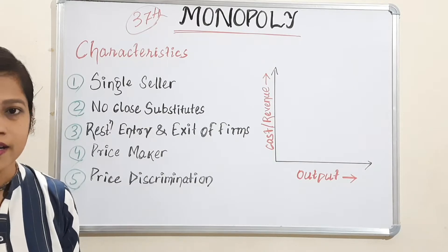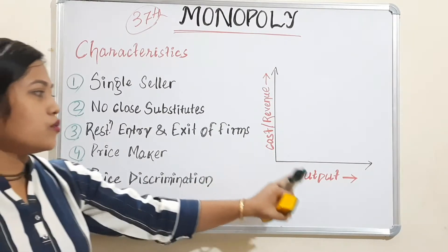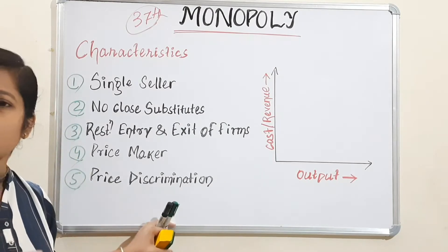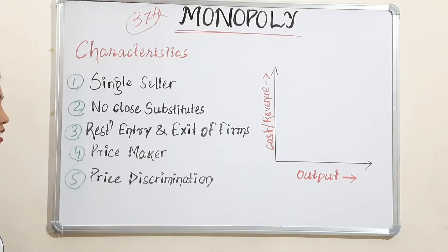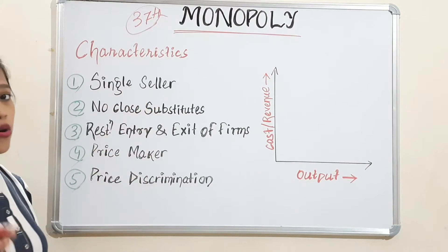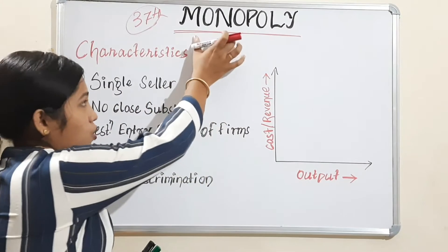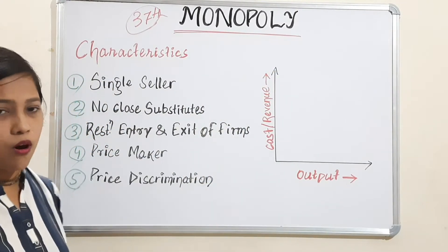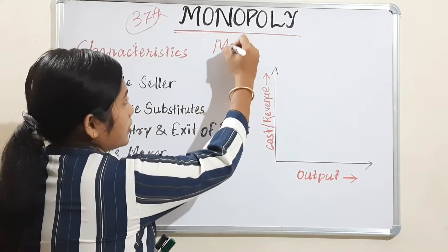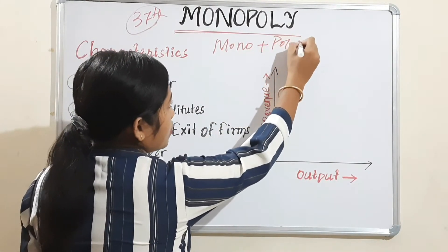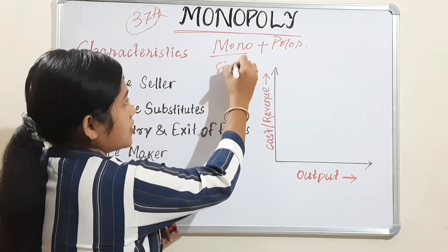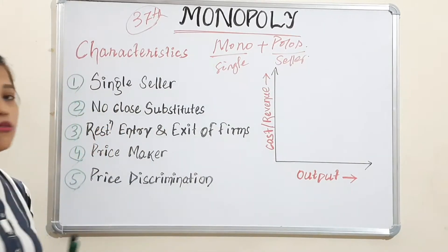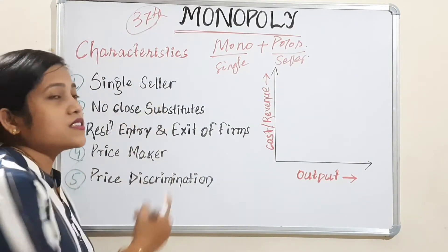What is exactly the monopoly market? Before moving to what happens in a monopoly market, let's give a brief view on the characteristics. The first characteristic is single seller. In monopoly, 'mono' means single and 'poly' — it came from the Greek word 'mono' plus 'polos', where mono means single and polos means seller. So as there is only one seller, it is called monopoly.